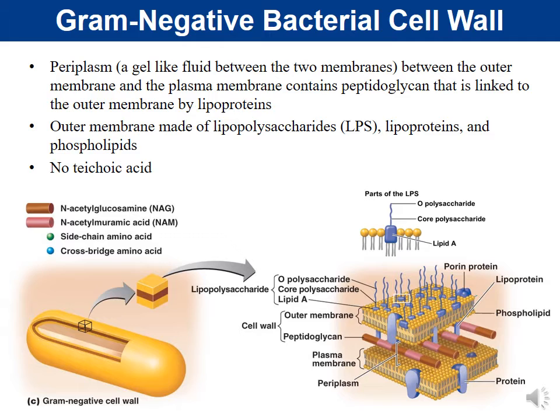One of the key differences between gram-positive and gram-negative is that gram-negative cell walls have no teichoic acid. So gram-negatives have an outer membrane, thin peptidoglycan, and lack teichoic acids in their cell wall.